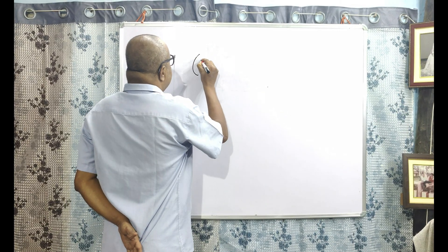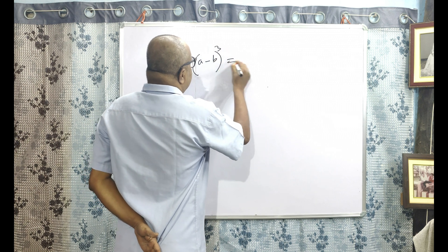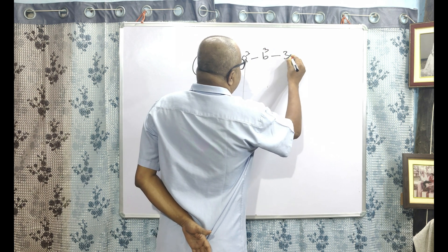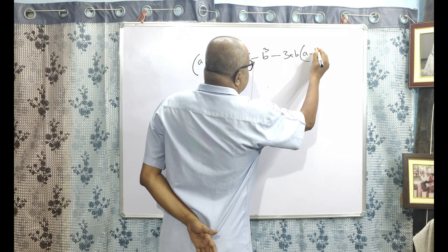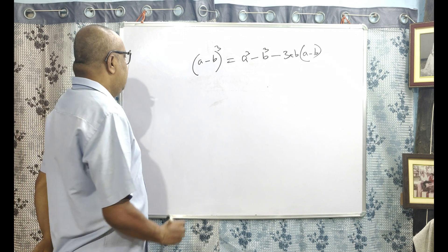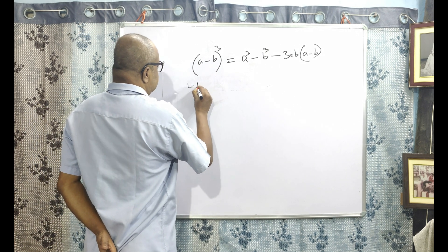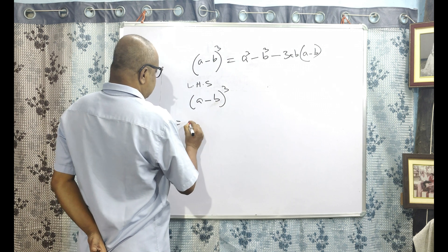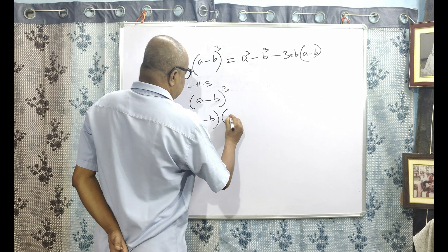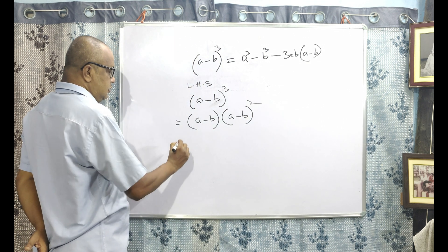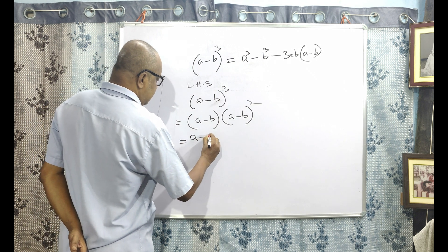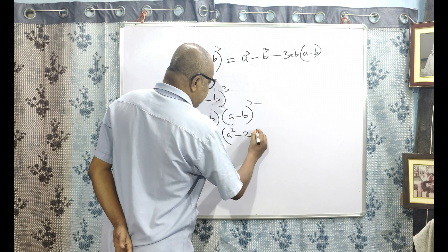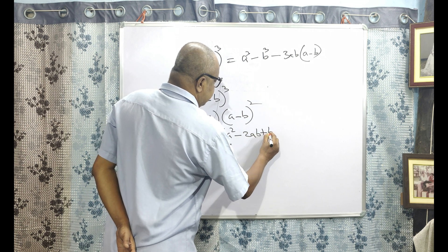That is, A minus B all cubed is equal to A cube minus B cube minus 3AB into A minus B. To derive it, taking the left hand side: A minus B whole cube is equal to A minus B into A minus B whole square, which is equal to A minus B into A square minus 2AB plus B square.